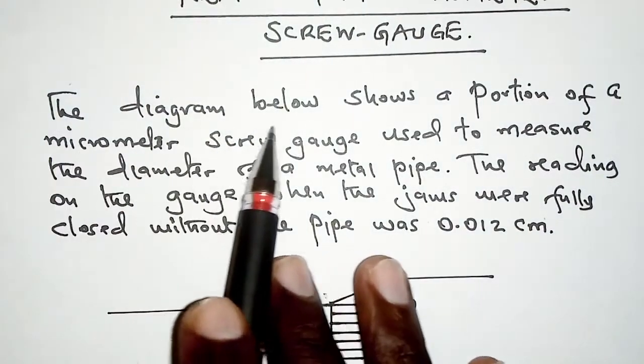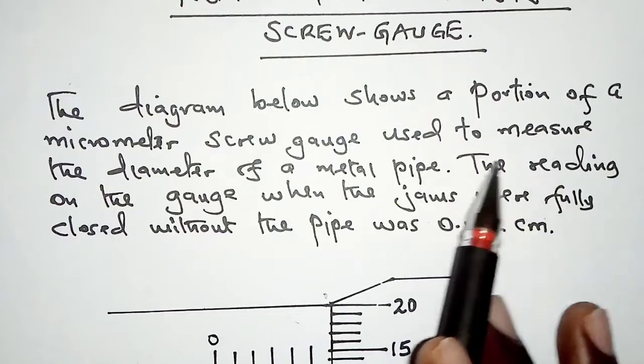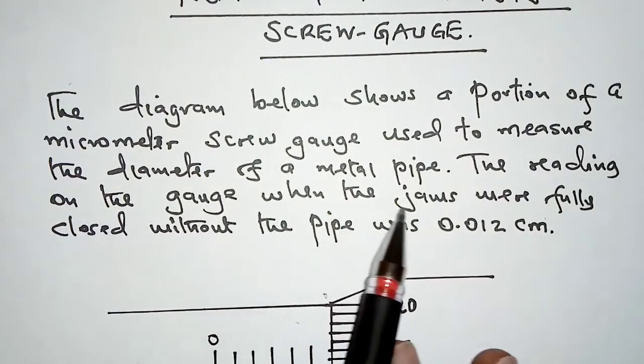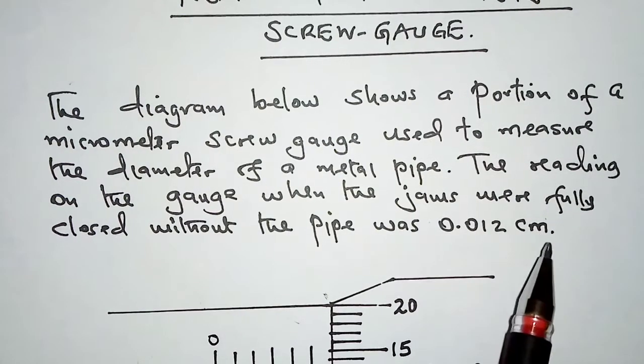The diagram below shows a portion of a micrometer screw gauge used to measure the diameter of a metal pipe. The reading on the gauge when the jaws were fully closed without the pipe was 0.012 cm.